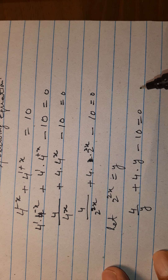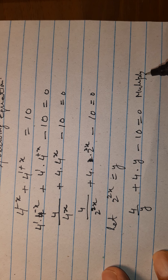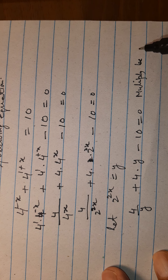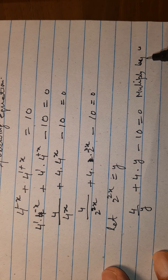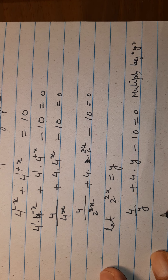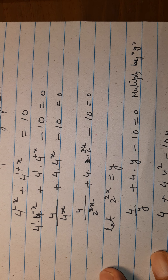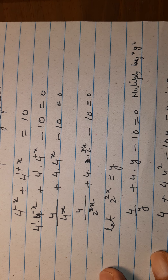Now we can multiply by y, we get 4 plus 4y squared minus 10y is equal to 0. And dividing by 2, this will be 2y squared minus 5y plus 2 is equal to 0.